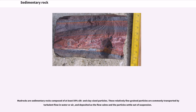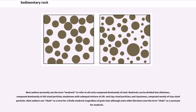Mud rocks are sedimentary rocks composed of at least 50% silt and clay-sized particles. These relatively fine-grained particles are commonly transported by turbulent flow in water or air, and deposited as the flow wanes and the particles settle out of suspension. Mud rocks can be divided into siltstones, composed dominantly of silt-sized particles; mudstones with sub-equal mixture of silt and clay-sized particles; and claystones, composed mostly of clay-sized particles. Most authors use shale as a term for a fissile mud rock.